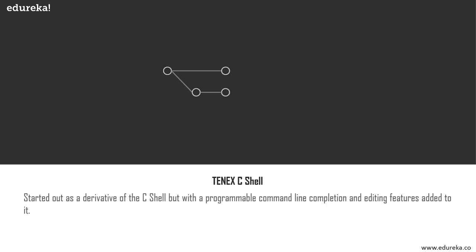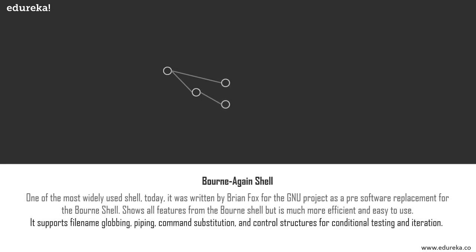After the Korn shell, we have the TCSH, which was a derivative of the basic C shell. This shell in 1983 was essentially the C shell but with programmable command line completion, command line editing, and a few other features.